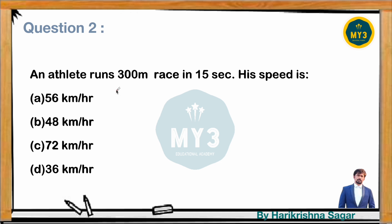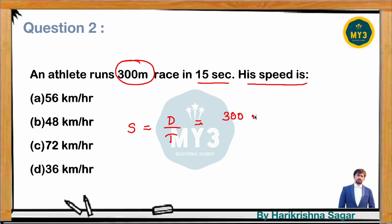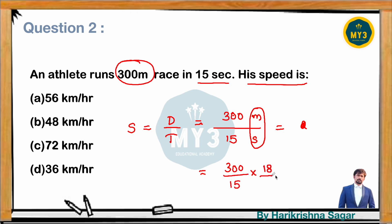An athlete runs a 300-meter race in 15 seconds. What is his speed in km per hour? Speed = distance/time = 300/15 m/s. To convert to km/hr, multiply by 18/5: (300/15) × (18/5). Simplifying: 15 and 5 cancel to give 300 × 18/75 = 4 × 18 = 72 km/hr. So speed is 72 km/hr.